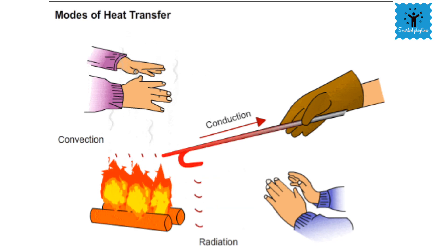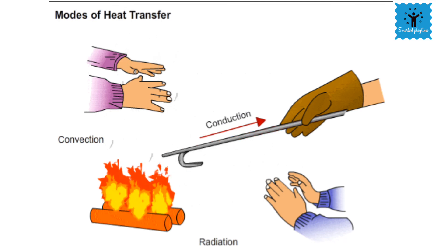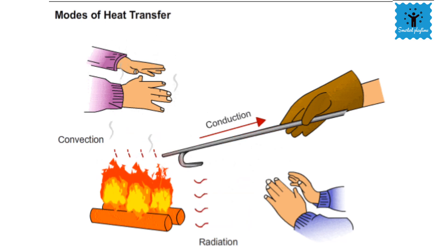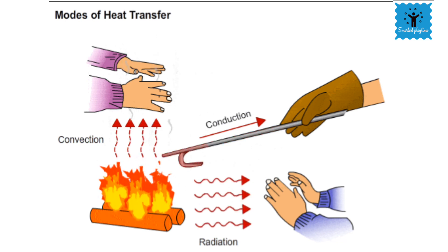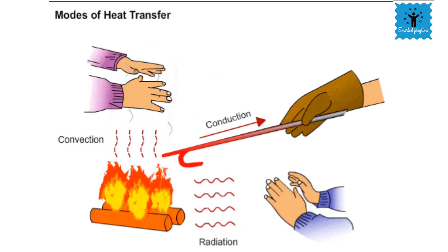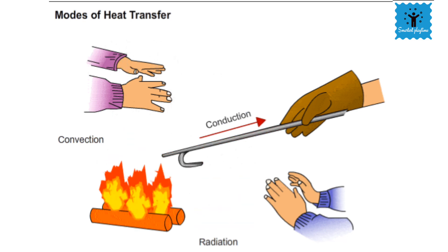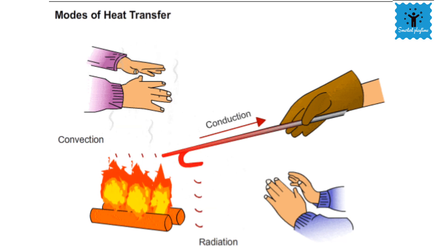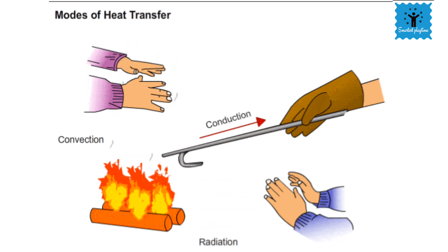The air around the flames becomes hot and rises up — in this case heat is transferred by the mode of convection. And you can still feel the warmth if you are far away from the fire, because in that case the heat is transferred by the process of radiation.